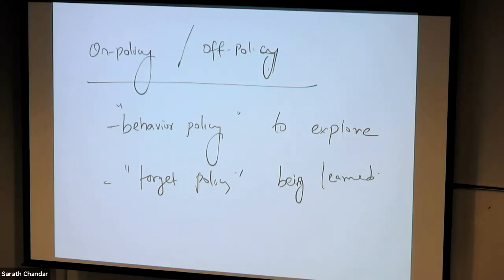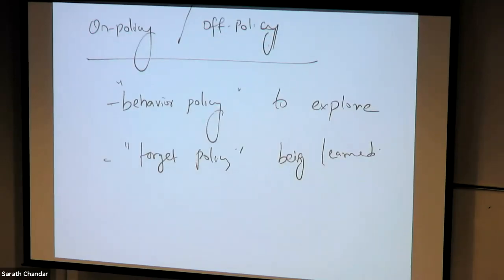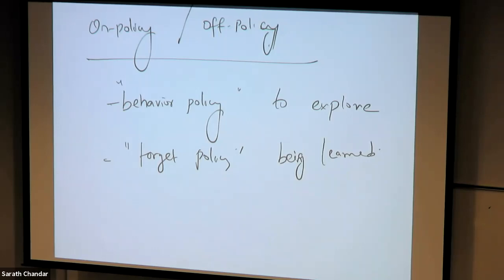Monte Carlo with exploring starts and Monte Carlo with epsilon-soft policies are all on-policy methods. Now let's construct an off-policy Monte Carlo method with two separate policies. The big advantage is I can have a behavior policy that is totally stochastic, guaranteeing I visit all states and actions, while the target policy is just greedy — deterministic and optimal.